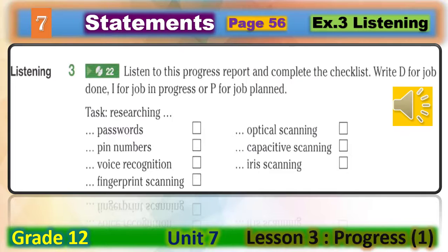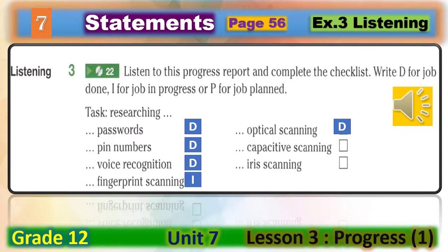Now let's check your answers to the checklist. Passwords: D — job done. PIN numbers: D. Voice recognition: D. Fingerprint scanning: I — in progress. Optical scanning: D — done. Capacitive scanning: I — in progress. Iris scanning: P — planned.